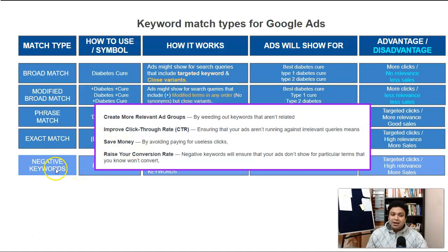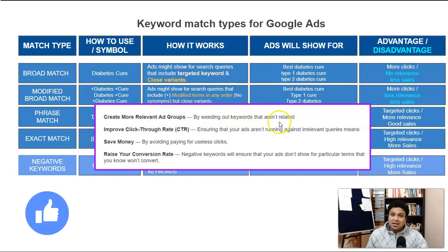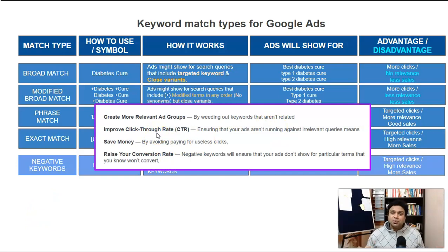The benefits of negative keywords include: creating more relevant ad groups, weeding out keywords not related to your offer, improving click-through rate — which raises your quality score — and helping your ad rank for desired keywords. It also saves money by avoiding paying for useless clicks, and raises your conversion rate by sending your ad to the buyer-intent audience of that particular niche or product.